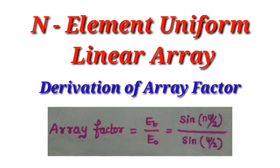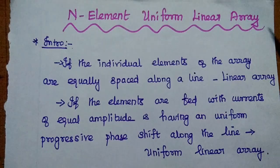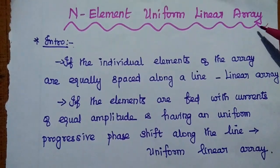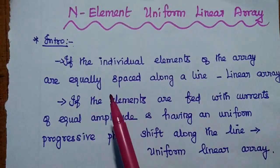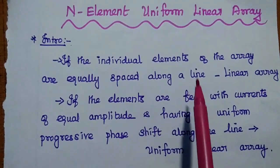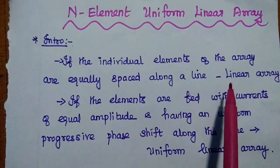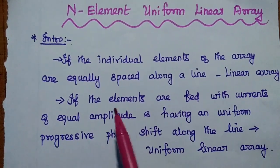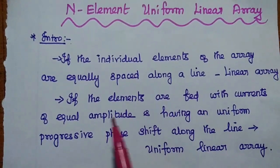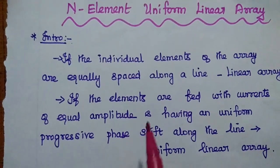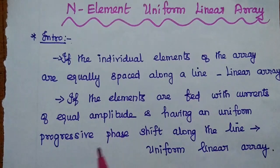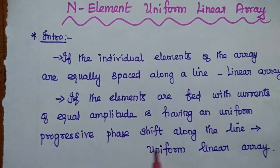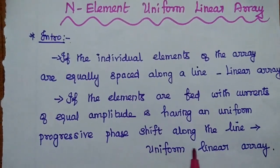We are going to discuss the N-element uniform linear array and its array factor. An array is a group of similar elements. If the individual elements are equally spaced along a line, that is called a linear array. If the elements are fed with currents of equal amplitude and having a uniform progressive phase shift along the line, that is called a uniform linear array.